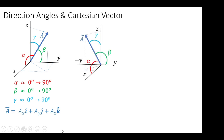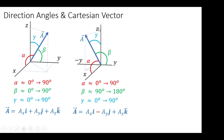For the second case, vector A is in positive x, negative y, and positive z. Since the vector is in positive x and positive z, those angles are in the range 0 to 90 degrees. But since the vector is in negative y, beta should be higher than 90 degrees but less than 180 degrees — because directional angles are measured from their positive axis. When we solve the Cartesian vector, the component in the y-direction should be negative.